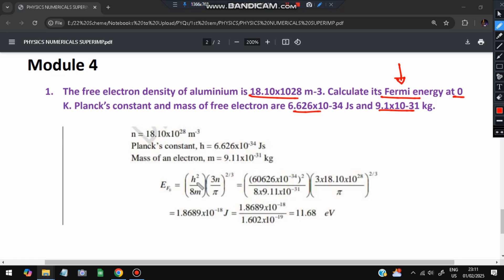So h²/8m we will write here, 3 into n, where n value is given which is the density here. We'll be multiplying it and dividing by π. So when you do that, we'll be getting an answer of 11.68 electron volts.